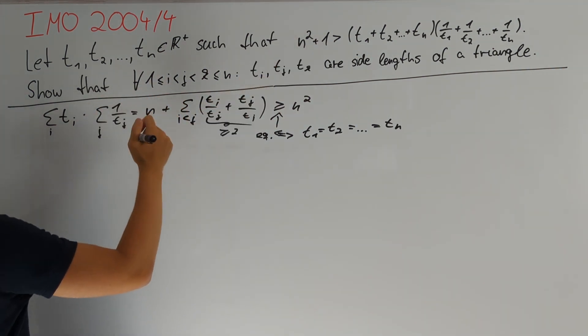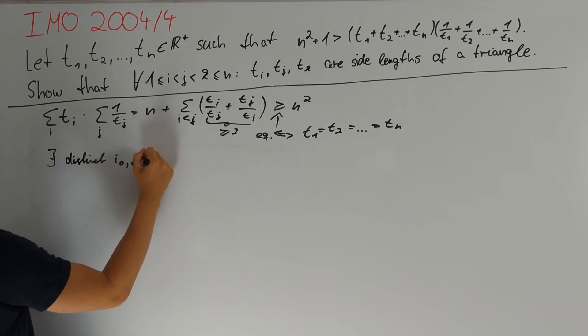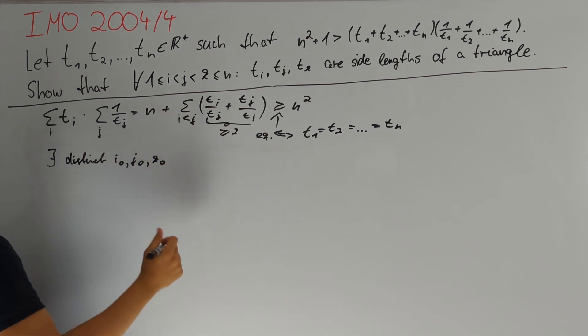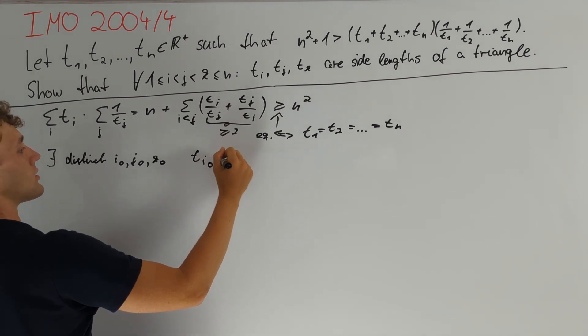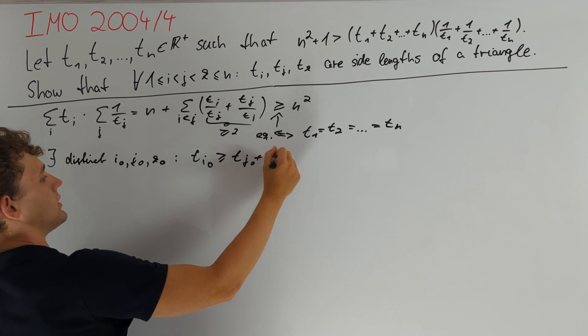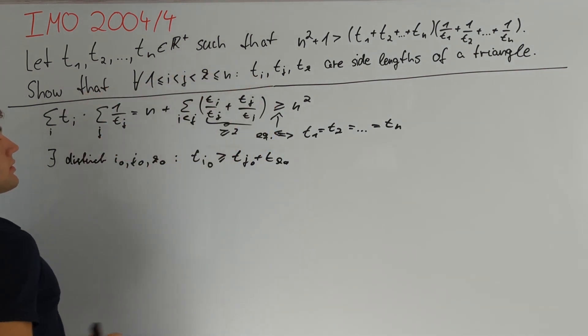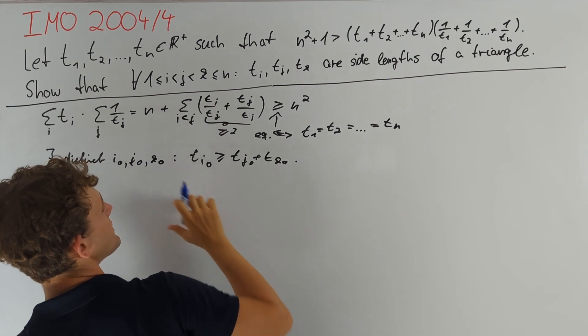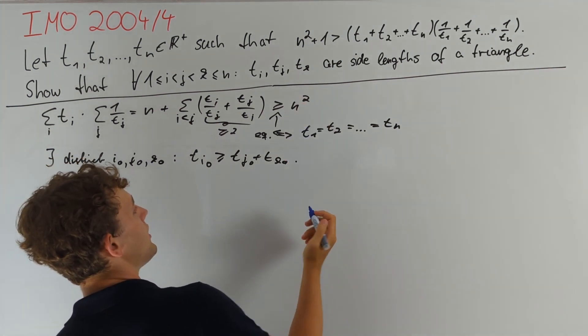I will write this assumption down in a slightly different way. Namely, we assume that there exists distinct i₀, j₀, and k₀ such that tᵢ₀ ≥ tⱼ₀ + tₖ₀, which is exactly equivalent to the inverse of that statement. Let's show that these three indices alone are responsible for an increase of our lower bound by 1.